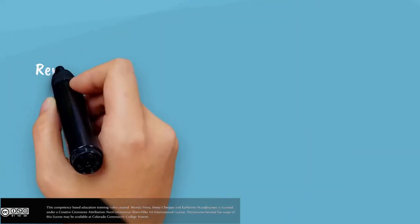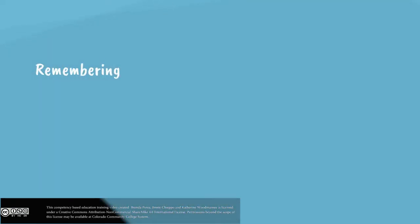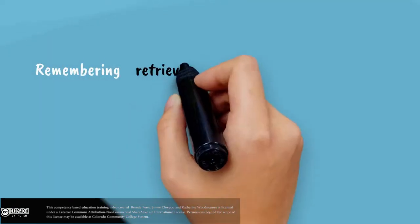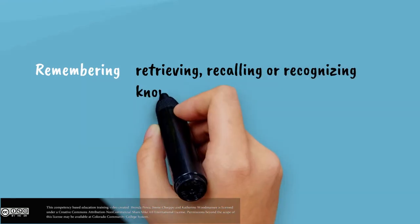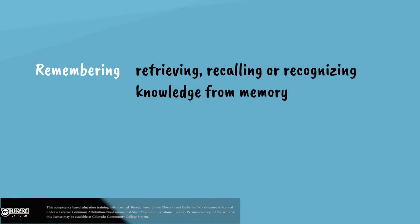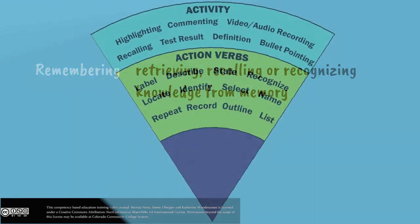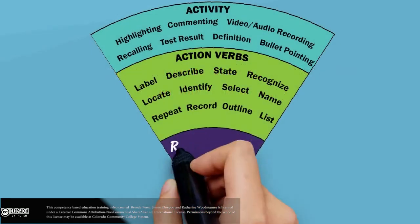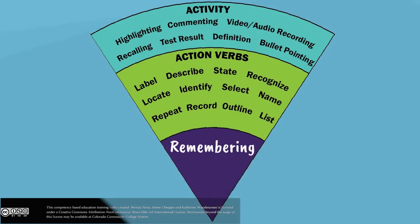The first level is remembering. It is defined as retrieving, recalling, or recognizing knowledge from memory. Some of the key verbs associated with remembering are recognizing, listing, describing, and locating. This piece of the wheel also shows additional key verbs as well as possible activities associated with the verbs.